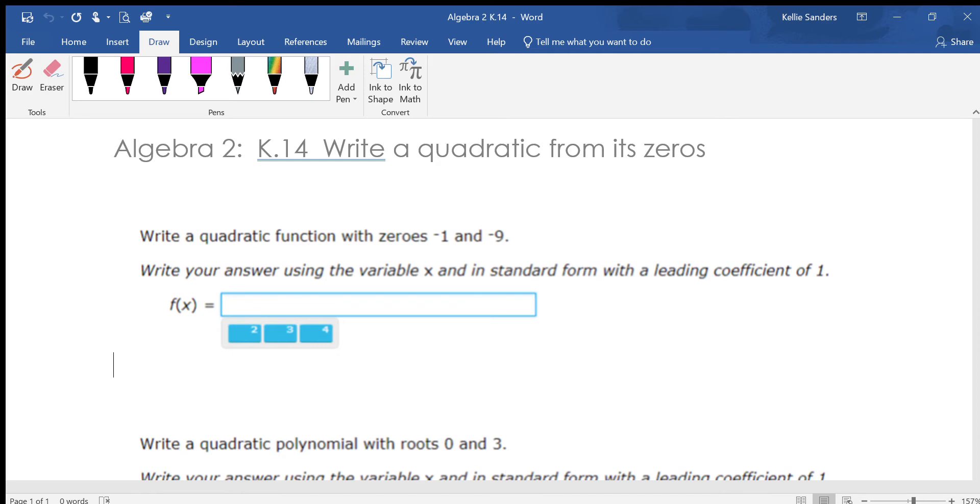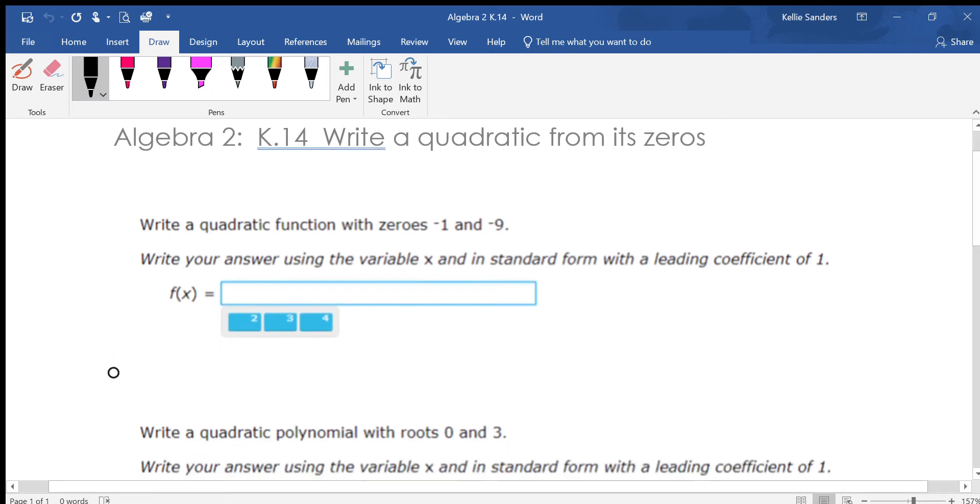Last unit lesson unit K: write a quadratic from its zeros. So remember, if these were the zeros, then they were the answers to a problem. How did we get those answers?